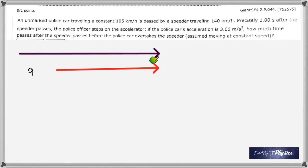When the police car starts accelerating, the speeder is already ahead by the difference in the velocities multiplied by the time. Now when you find the difference in velocities, you've got to change into meters per second. You get it as 29.2 meters per second and 38.9 meters per second.